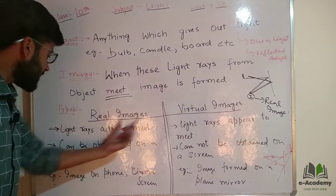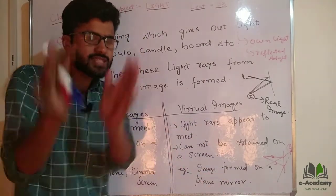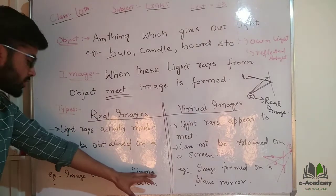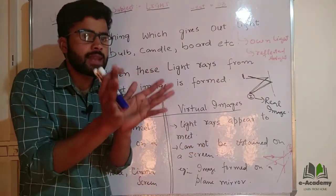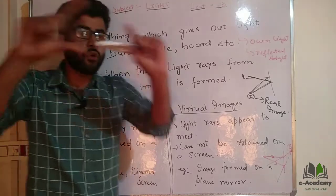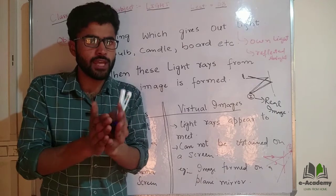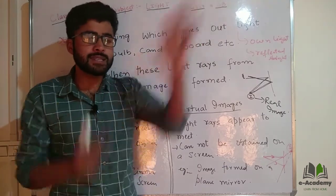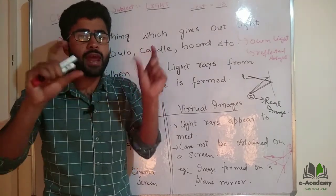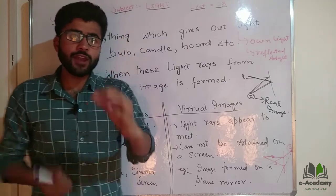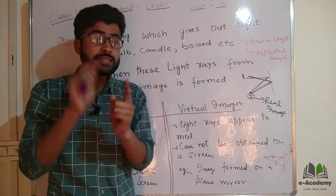So you will remember that in a real image, the light rays actually meet. In a virtual image, the light rays appear to meet. If the light rays actually meet, then we can see this real image on the screen. For example, in the camera, in the cinema, the image projected is a real image. Actually the light rays meet, and even if we remove the object after the image is formed, the image still exists there. That is the real image.